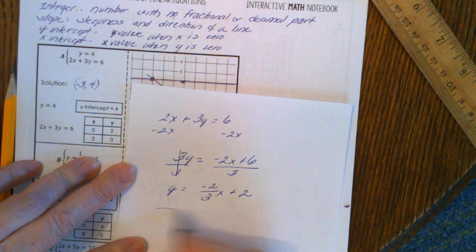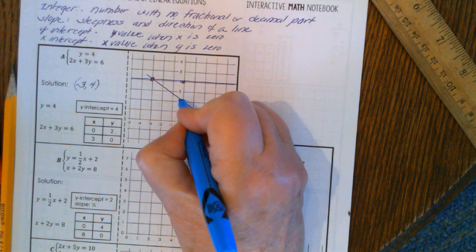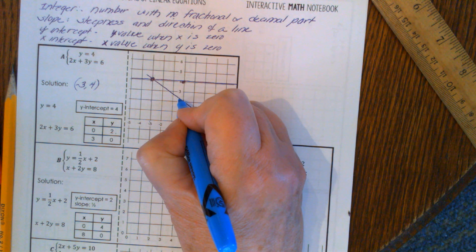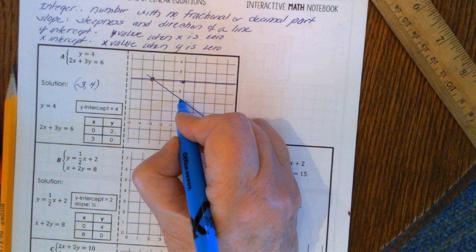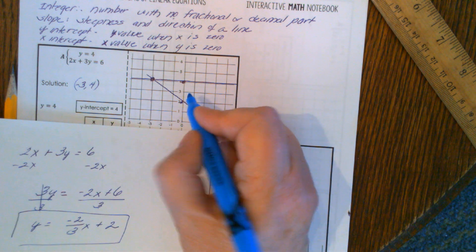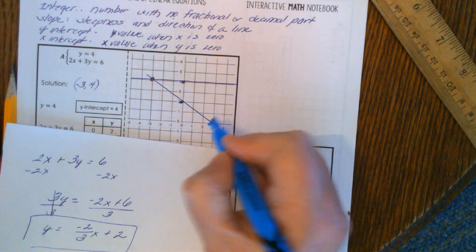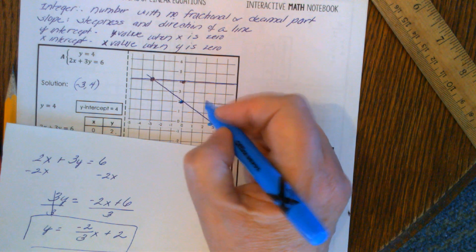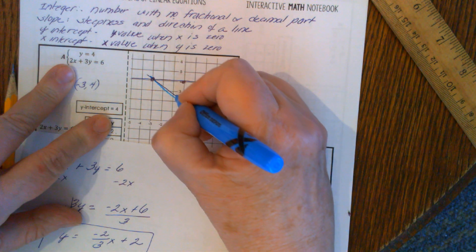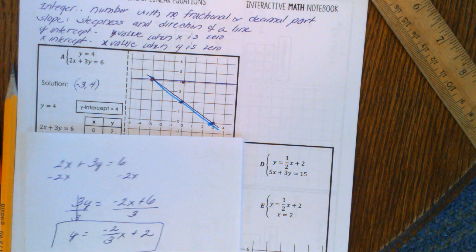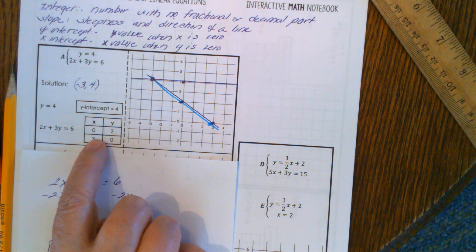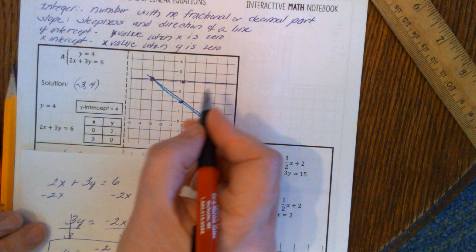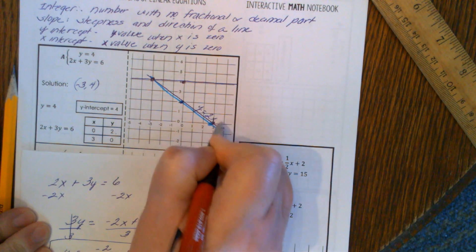Another way to graph is: once the equation is in slope-intercept form, plot the y-intercept at 2, then go down 2 and over 3 using the slope. You'll get the same line. You can use slope-intercept form or plug in values — there are different ways to do it. Make sure to label your lines so you can keep them straight.